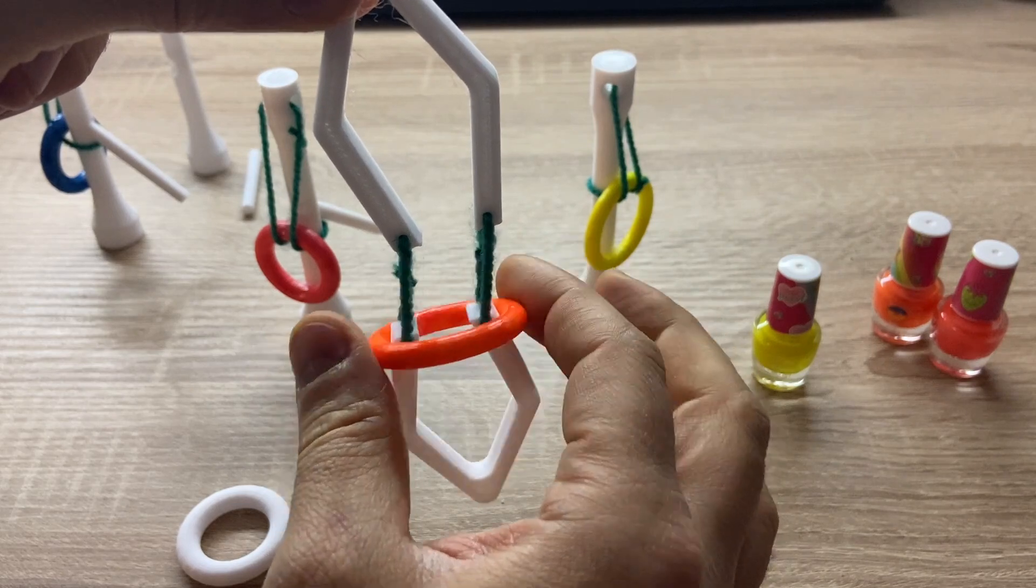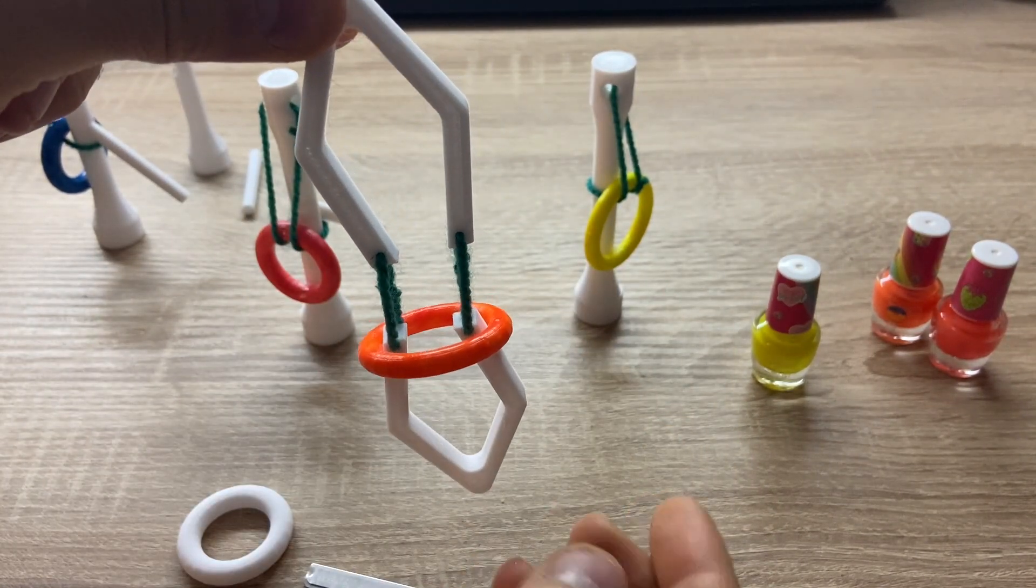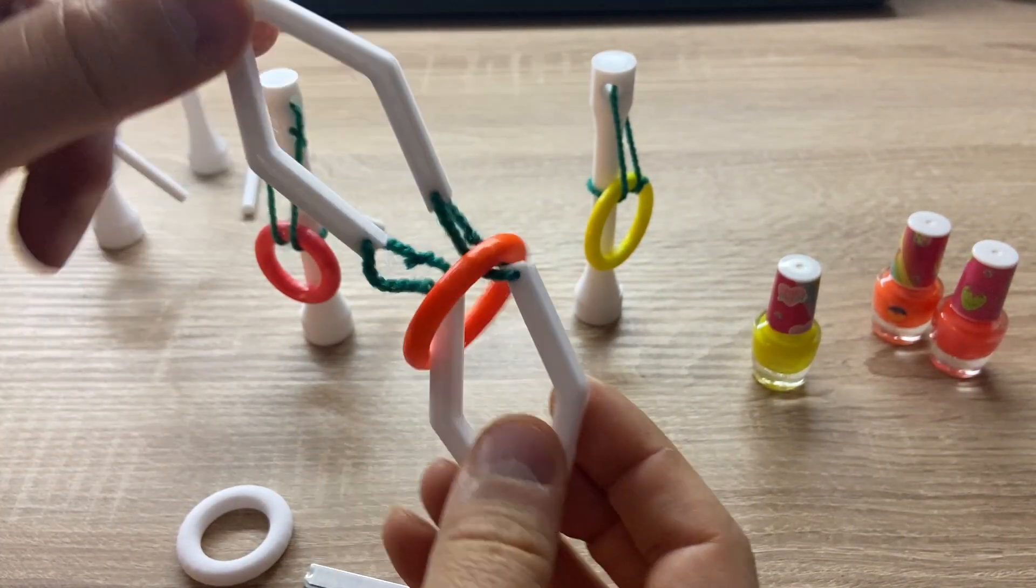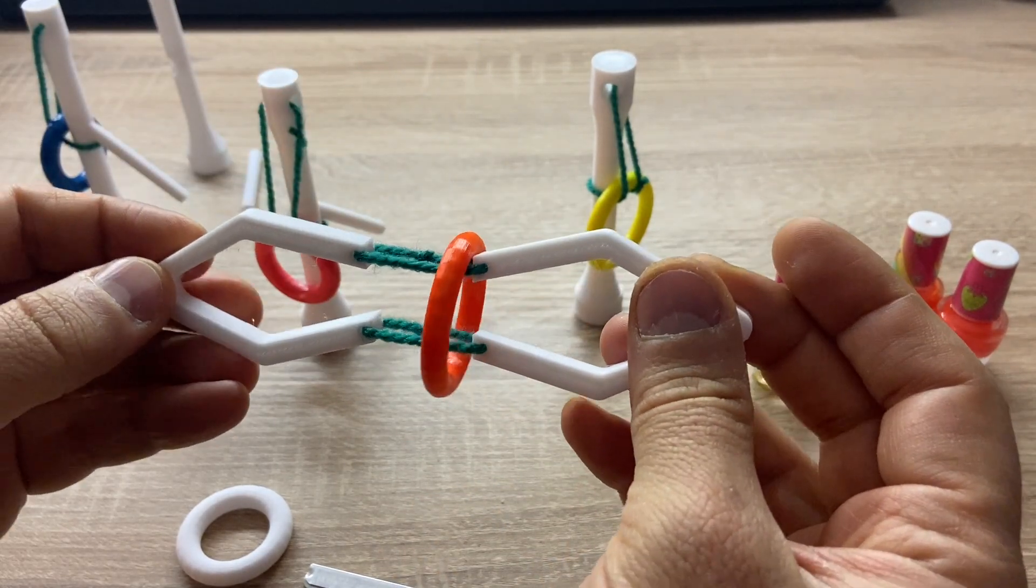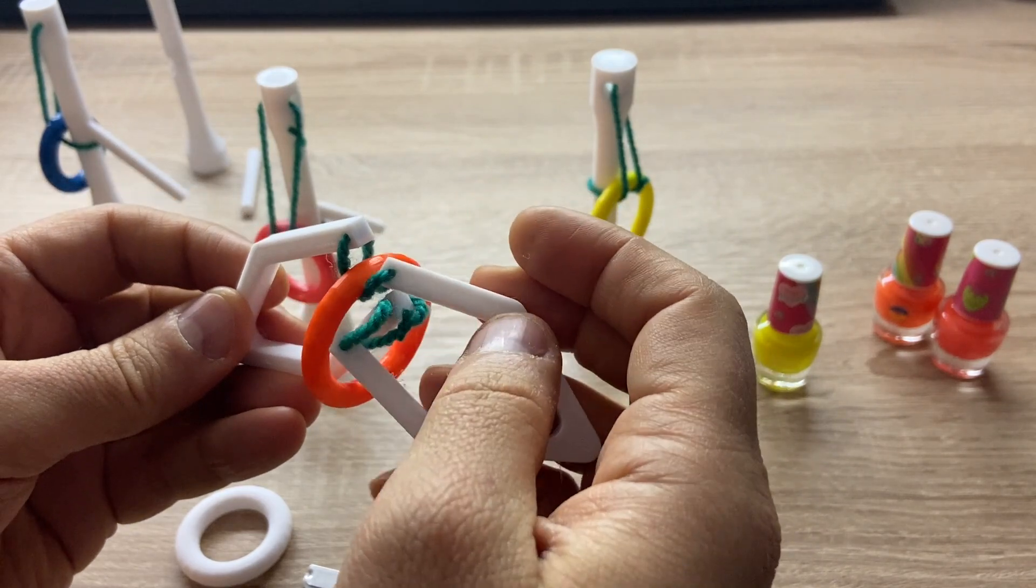But obviously in this case this is stiff so we cannot do anything with this. However, this bigger ring can be deformed because it's loose and that's the trick how to solve it.